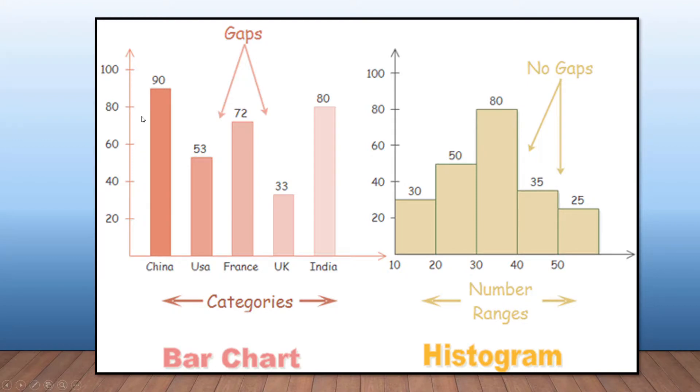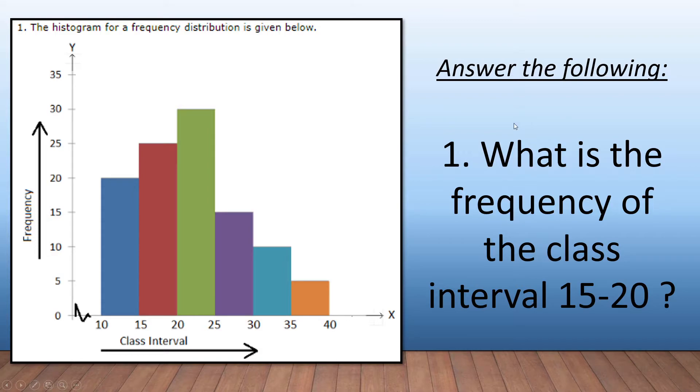Here you can see a bar chart - we're dealing with, for example, China, USA, France, the UK. We can see the gaps because this is only dealing with China, only dealing with the USA, whereas a histogram deals with continuous data. So let's look at a few examples of questions.